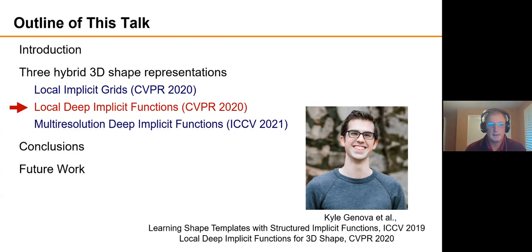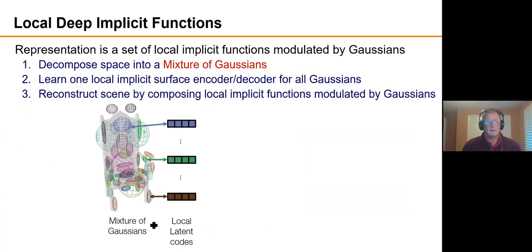Another example is Local Deep Implicit Functions. So this is a paper that was done by Kyle Genova at CVPR 2020. And the idea is quite similar.